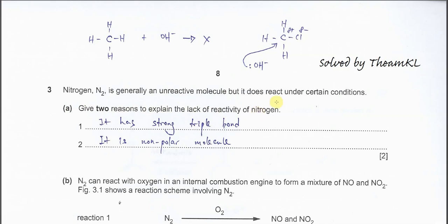This is a very common question asked about nitrogen. The first reason is that nitrogen has a strong triple bond. Between nitrogen atoms, there are three covalent bonds, and this triple bond is extremely strong. It needs a large amount of energy to break it, so nitrogen will not easily react.